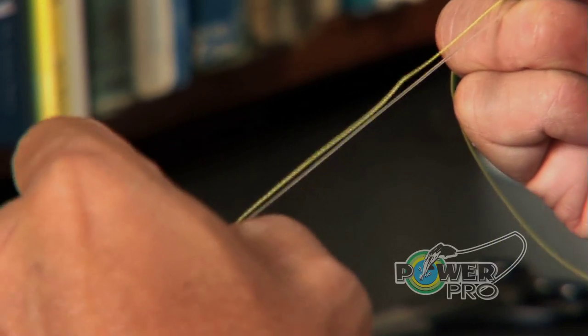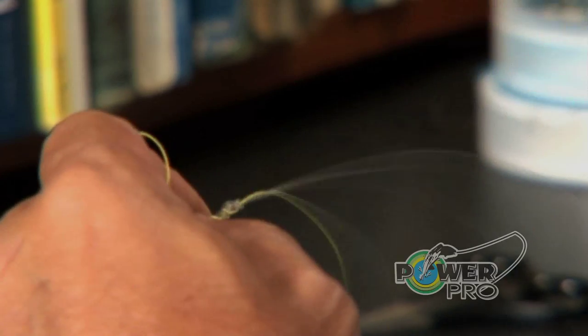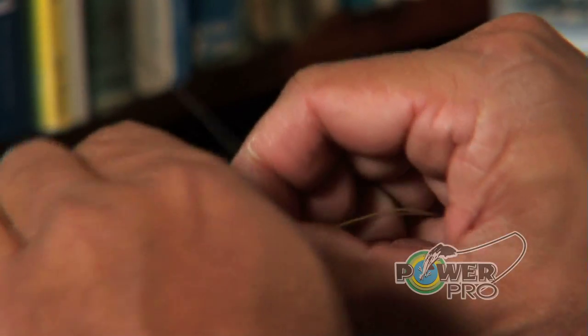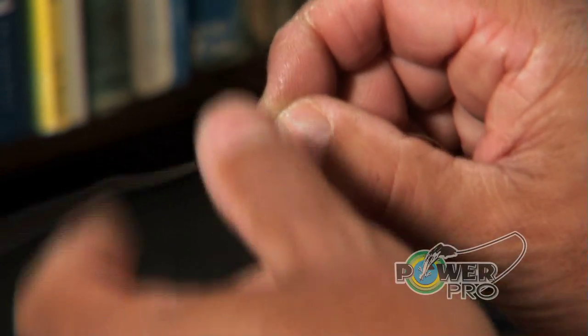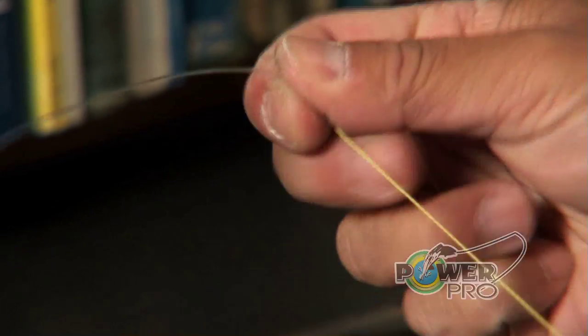You can snug up that uni just a little bit. You don't want to tighten it too much, but you just want to snug it up so it doesn't move much. And you take and you make a little loop of Power Pro.